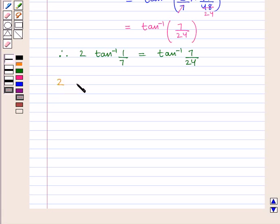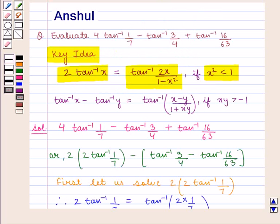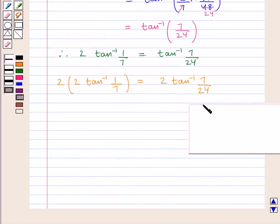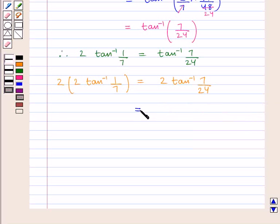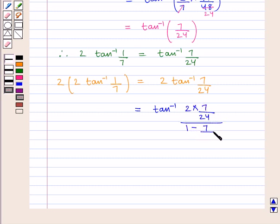And the expression 2 into 2 tan inverse of 1 by 7 becomes 2 tan inverse of 7 by 24. Using the same formula — 2 tan inverse of x equals tan inverse of 2x upon 1 minus x square, if x square is less than 1 — we assume x equals 7 by 24. Then x square equals 49 upon 576, which is less than 1. Therefore, 2 tan inverse of 7 by 24 can be written as tan inverse of 2 into 7 by 24 upon 1 minus 7 by 24 square.